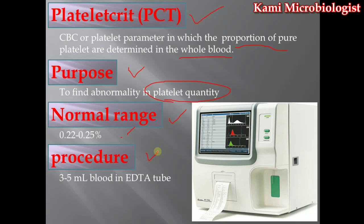The procedure to find out the PCT involves taking 3 to 5 ml of blood in an EDTA tube and running it through an automated hematology analyzer machine. First, we remove the cap from the EDTA tube, then place the tube to dip the needle of the machine into the blood, and press the button. Once pressed, the machine takes the blood, the needle retracts, and after about 5 minutes it will give you all the CBC parameters including PCT.